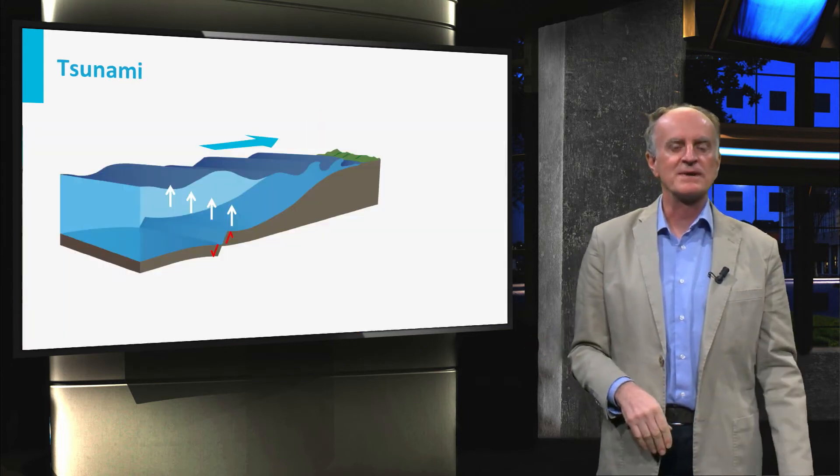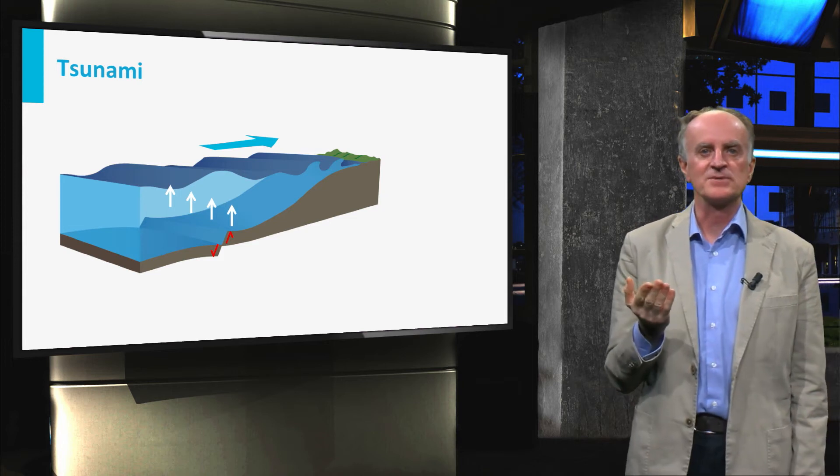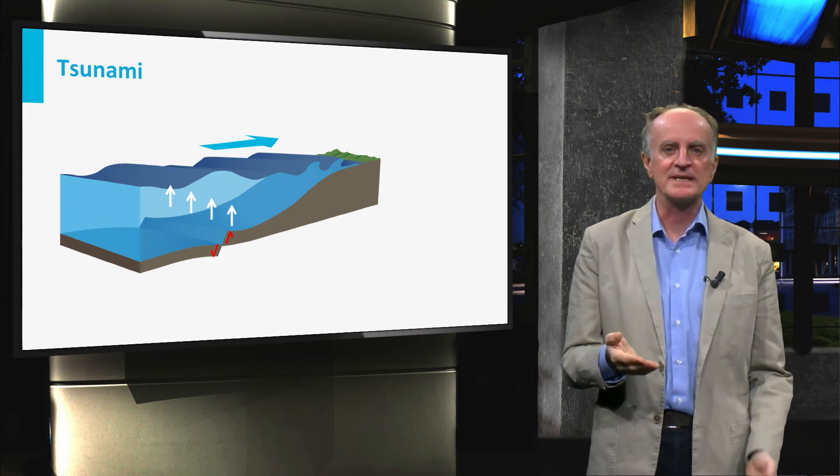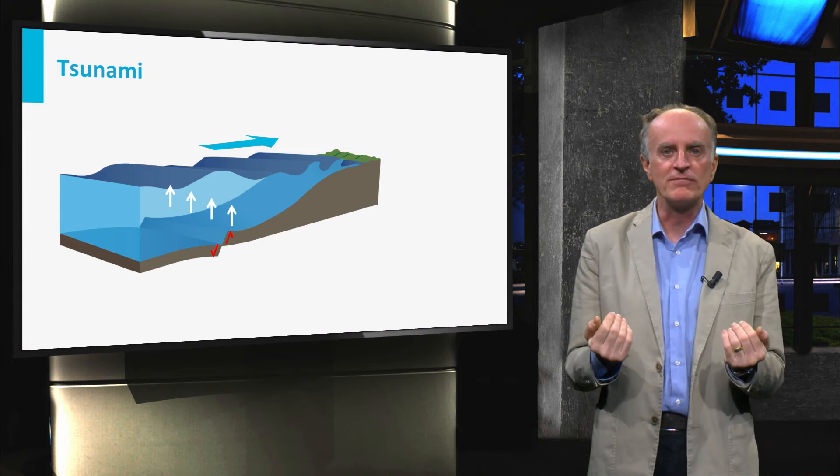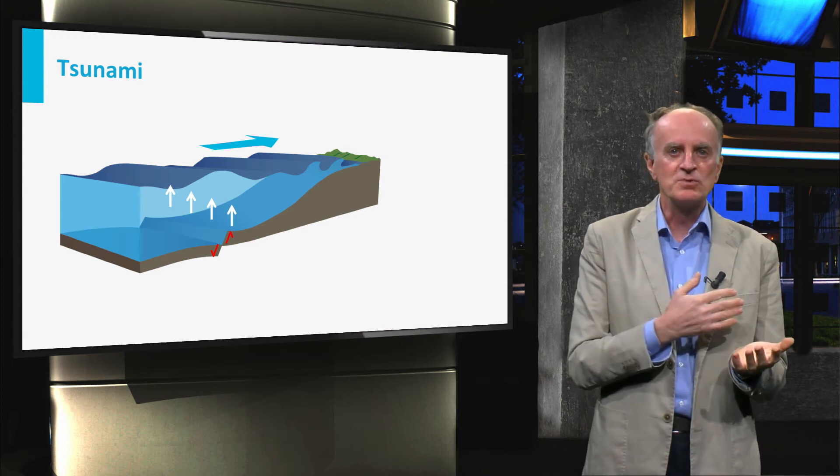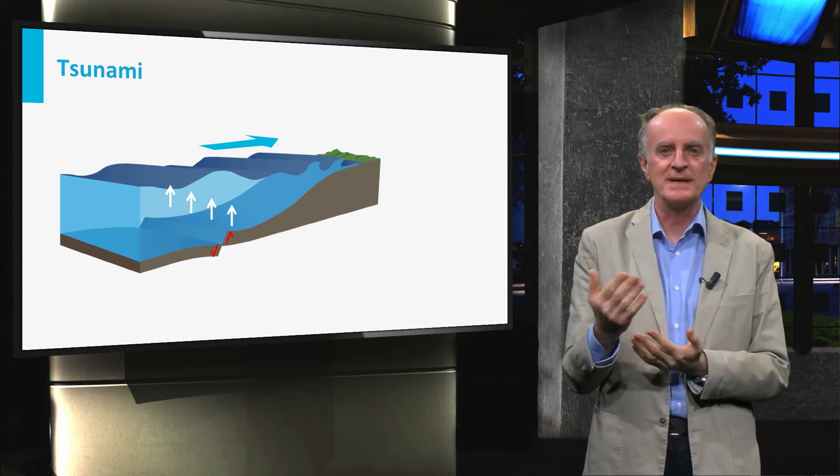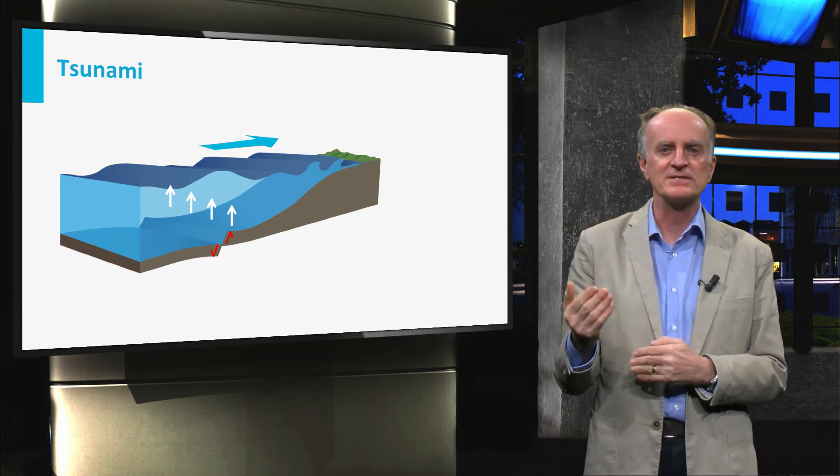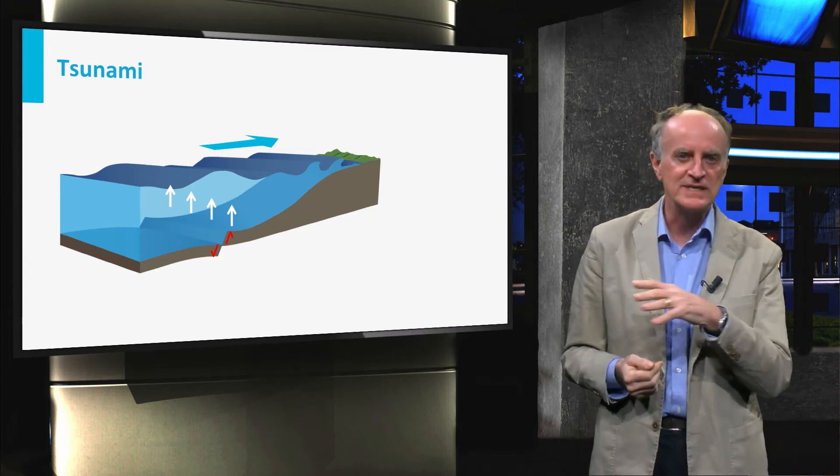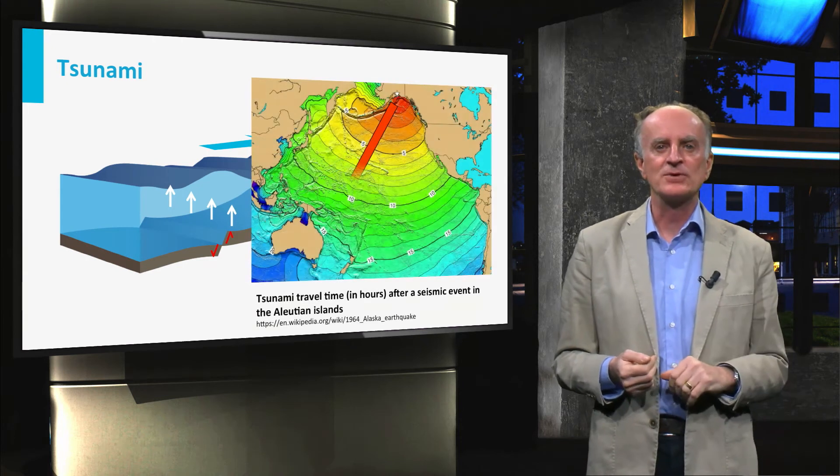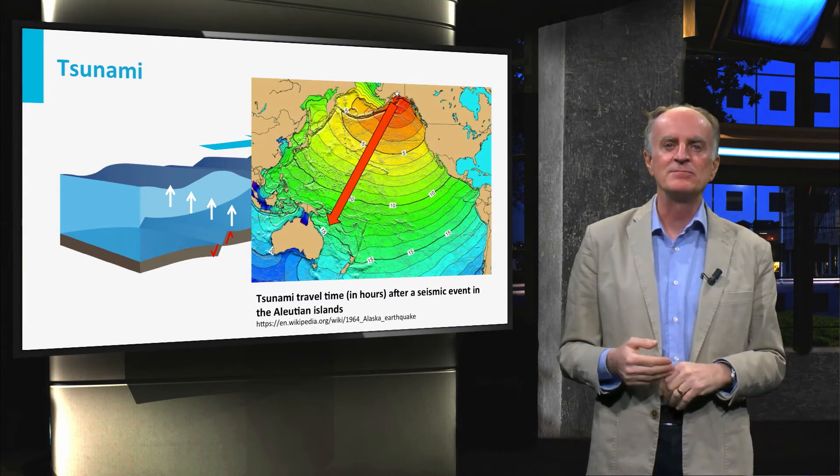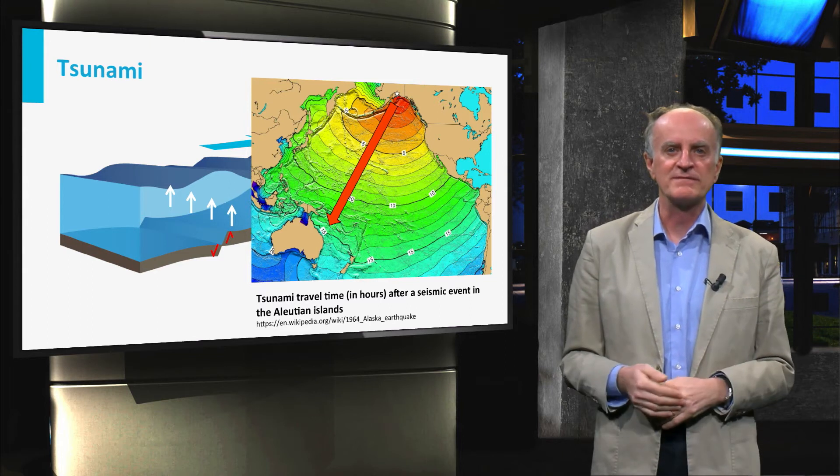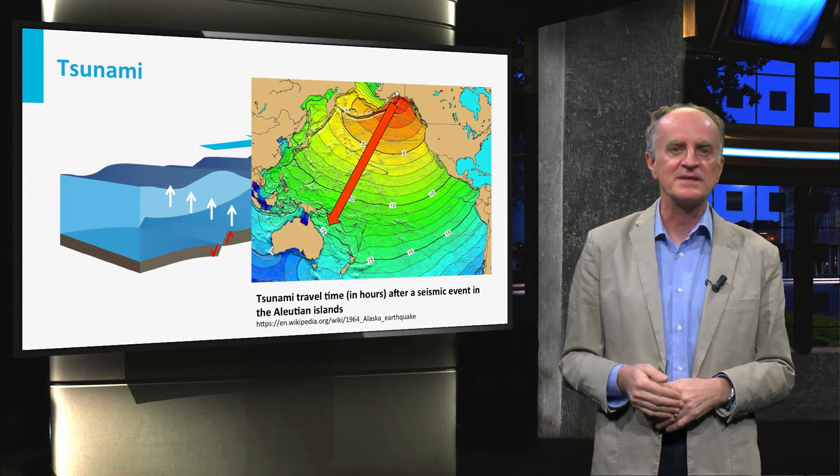One of the most destructive consequences of earthquakes are tsunamis, which are generated by the sudden upward movement of fault blocks. Huge water masses are suddenly displaced, generating waves which travel at velocities of hundreds of kilometers per hour over huge distances. In the case of a major earthquake in Alaska, the tsunami waves reached the coast of Australia 15 hours after the event.